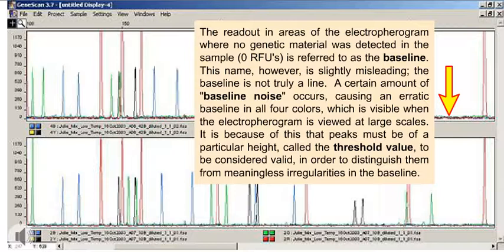A certain amount of baseline noise occurs, causing an erratic baseline in all four colors, which is visible when the electropherogram is viewed at large scales. It is because of this that peaks must be of a particular height, called the threshold value, to be considered valid in order to distinguish them from meaningless irregularities in the baseline.